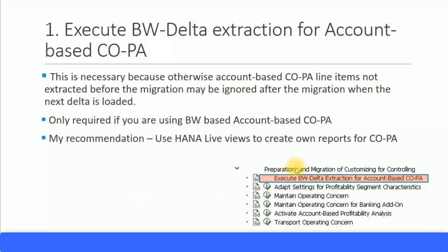The first step as part of the preparations and migration customizing for controlling activities is to execute the BW delta extraction for account-based COPA. You don't execute this in this menu path — you request your BW consultant to perform a backup of all the account-based COPA line items and migrate to the next delta load. However, it is only necessary if you are going to proceed with BW-based account-based COPA. I would recommend using the HANA live views to create your own reports for COPA, because now everything can be reported out of the ActDoka table. You can use the HANA live browser reports to create your own COPA-relevant reports based on different characteristics and different account settings.